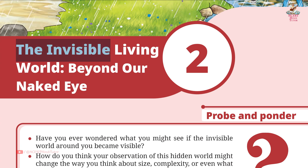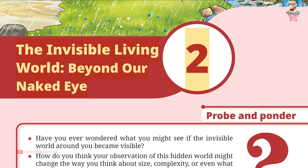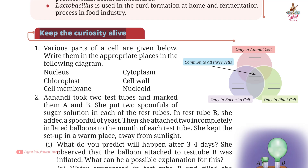Chapter 2: The Invisible Living World Beyond Our Naked Eye — question answers from Grade 8 Science book Curiosity. Question 1: Various parts of a cell are given below; write them in the appropriate places in the following diagram.